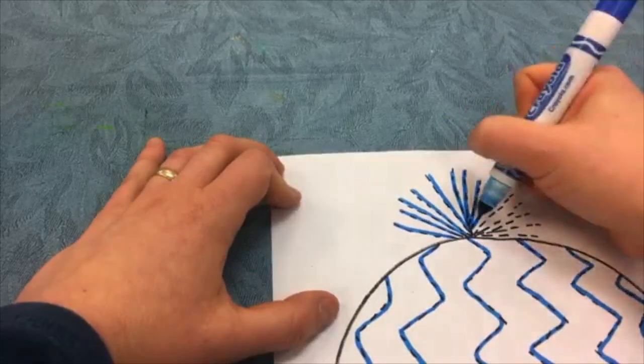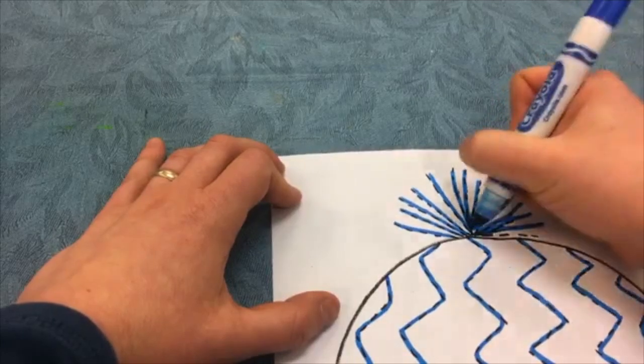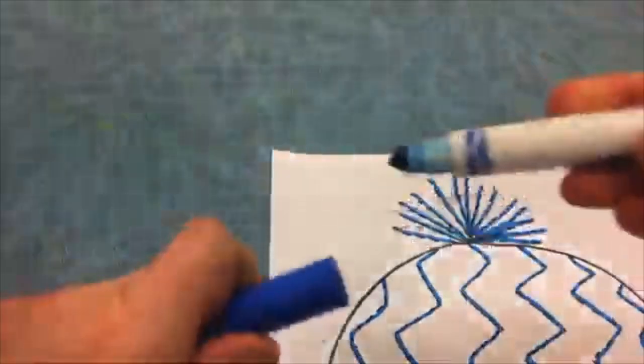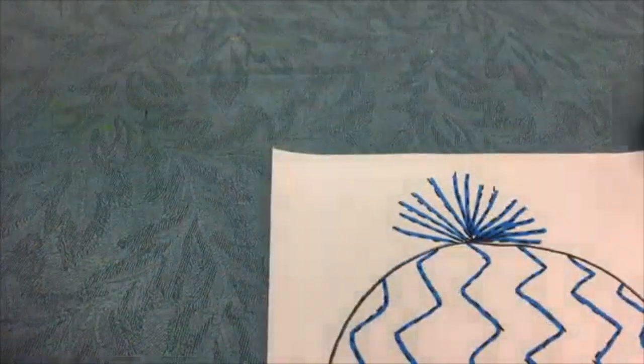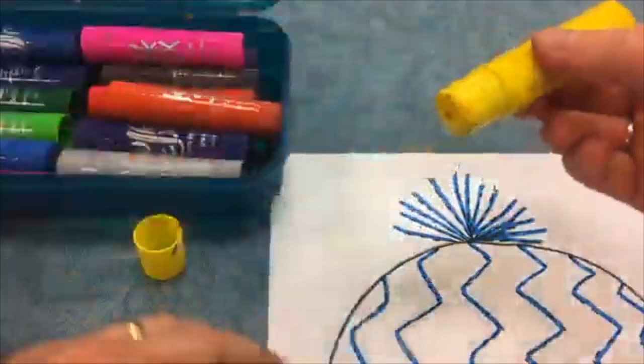Once I trace all of my lines, I get to go back with paint sticks and add a little color. Take the cap off my marker. Listen for the click. Click. Alright. Now I get to color. Take the cap off.